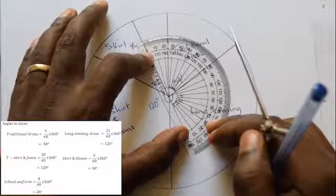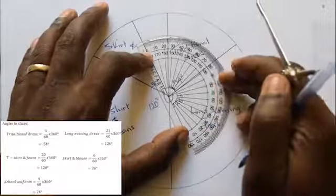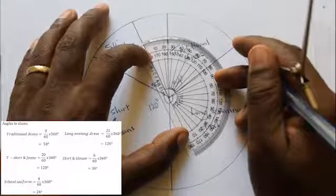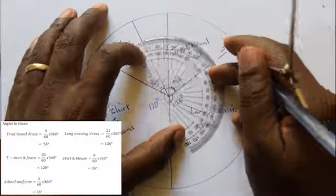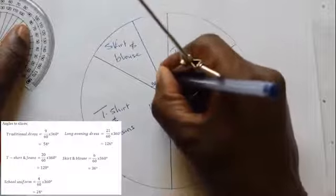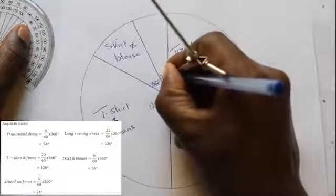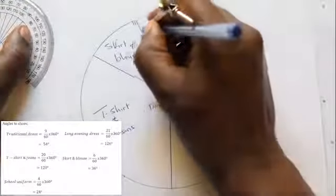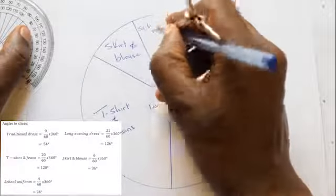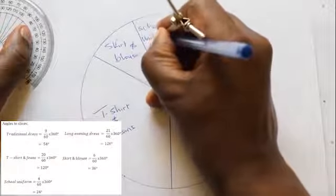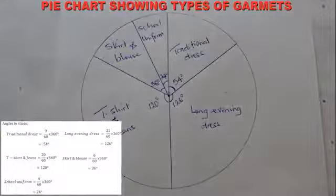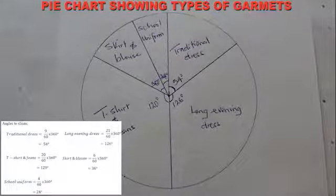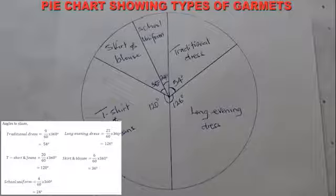It is always good to check the last slice to confirm the angle. Note that the sum of all angles of all slices add up to 360 degrees.